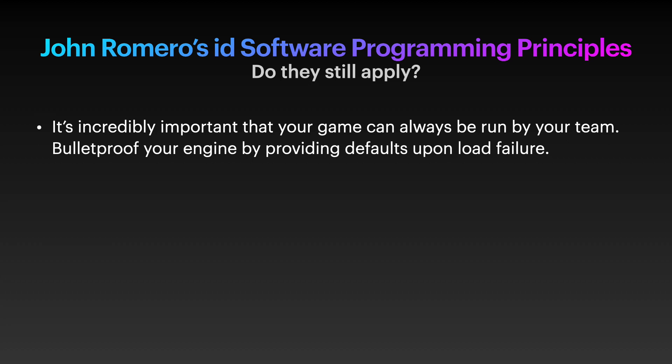The second principle is it's incredibly important that your game can always be run by your team. Bulletproof your engine by providing defaults upon load failure. This is definitely still relevant. However, many of you are using commercial engines so this may already be done for you. If you're making your own engine, you would be wise to bulletproof it. This also is a good idea for non-video games. It's always nice to use plenty of try-catch statements so the application will still run if a web service it is trying to access times out.